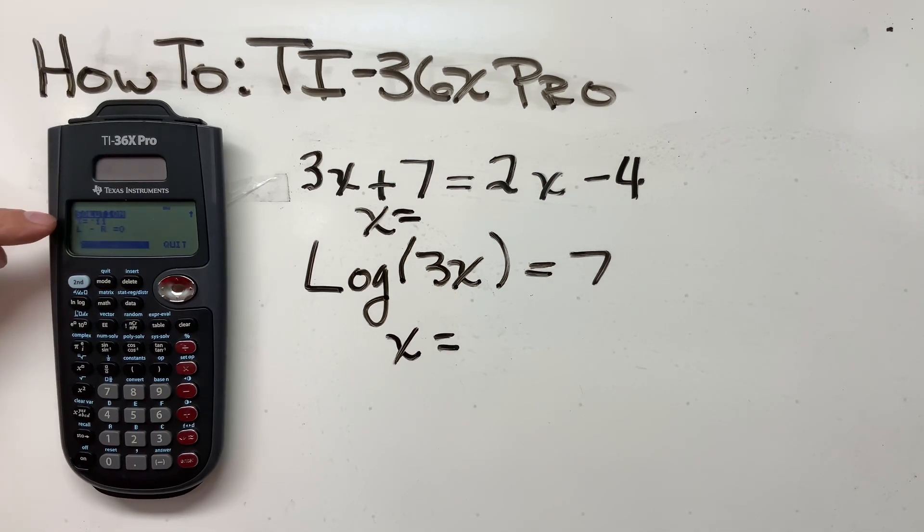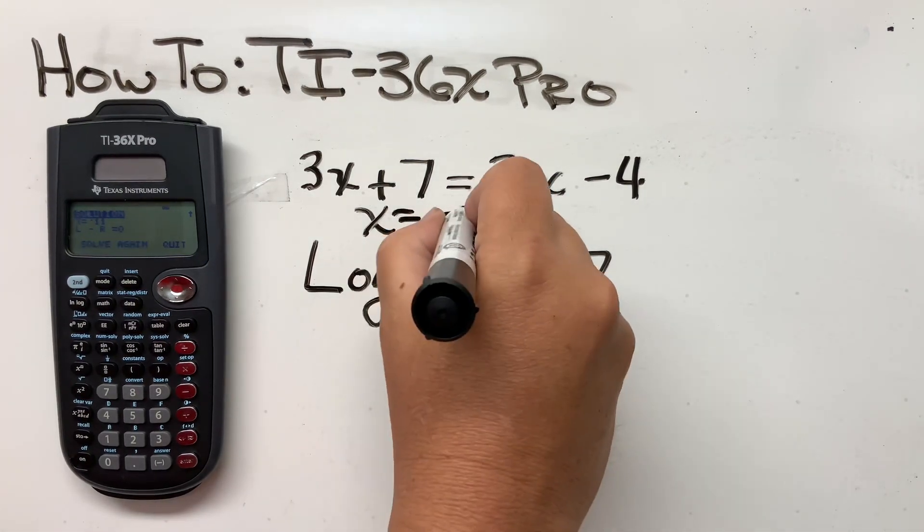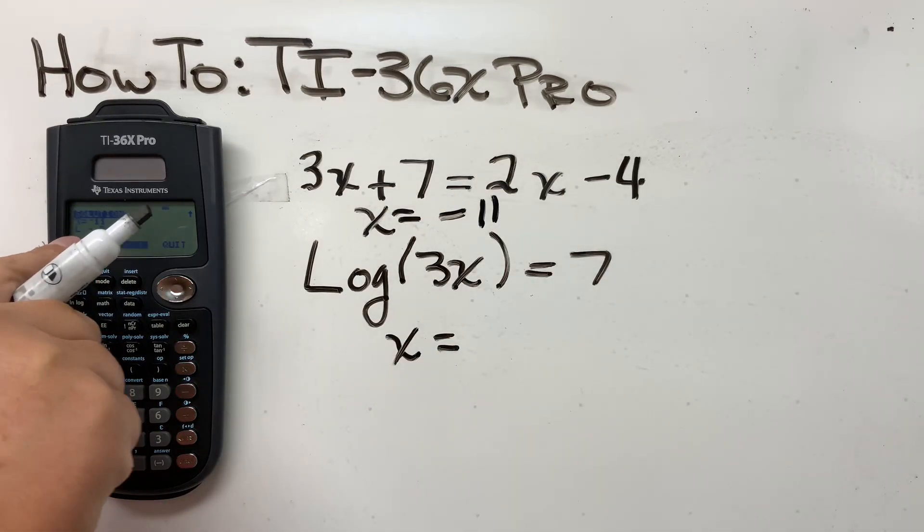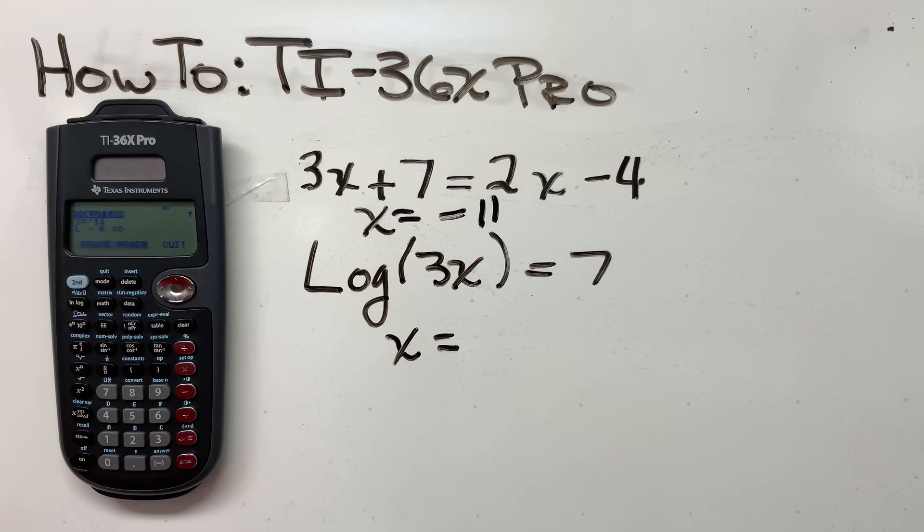It thinks for a second. And it says X is minus 11. And it also says that on this function, the left minus the right is zero, which tells us we have a balanced equation. Everything's good there.